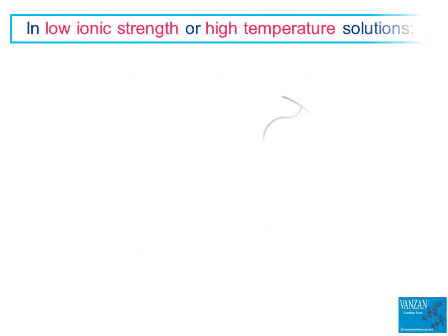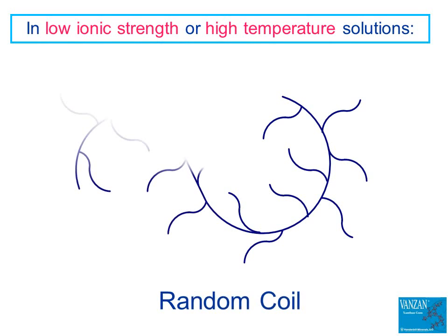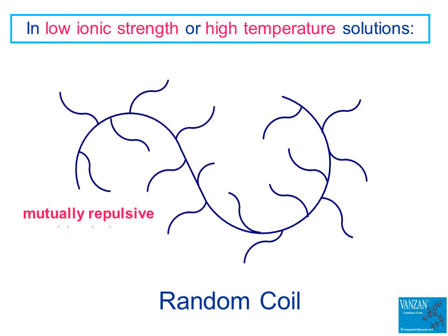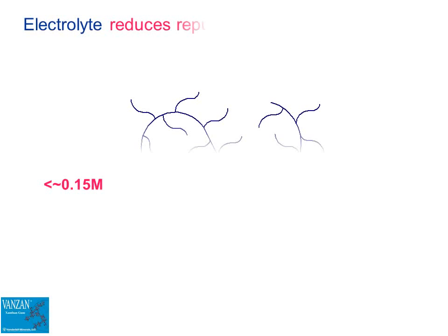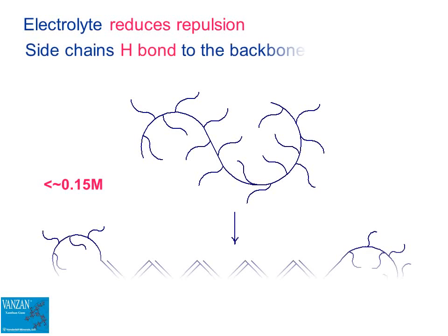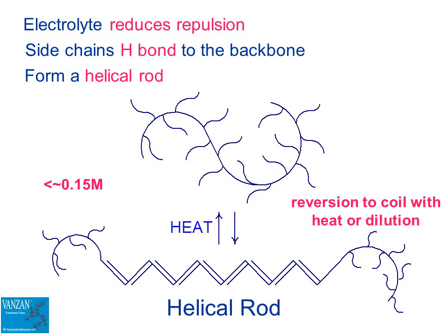In solutions of low ionic strength or at high temperature, the xanthan gum chains adopt a random coil configuration because the anionic side chains are mutually repulsive. A small amount of electrolyte reduces repulsion among the side chains; they wrap around and hydrogen bond to the backbone, forming a helical rod. This reverts to the random coil if the gum solution is heated or highly diluted.